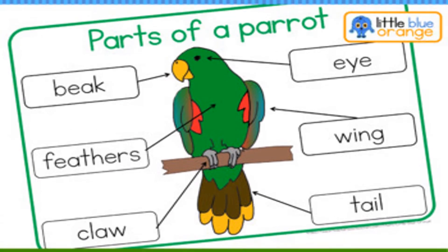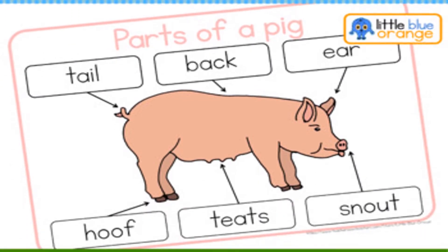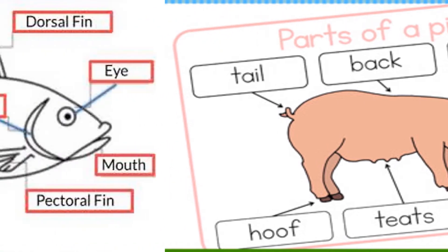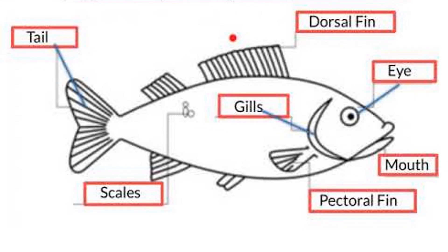Here we have the body parts of a parrot or a bird. And here we have the parts of a pig. Here we have the different parts of a fish. As you can see, they have different kinds of fin. The tail is another kind of fin that enables it to move around. Its body is covered with scales. The scales can be big, just like the ones in milkfish or bangus and tilapia, or it could be small scales, just like the ones on the shark or galunggong.